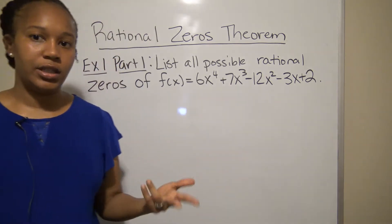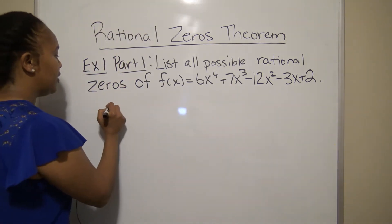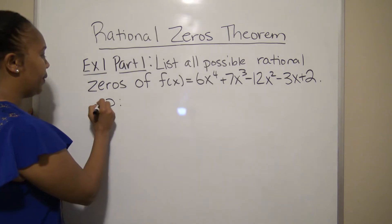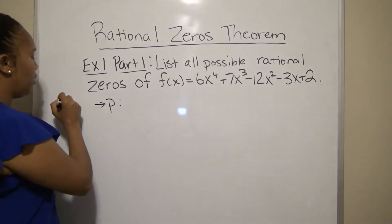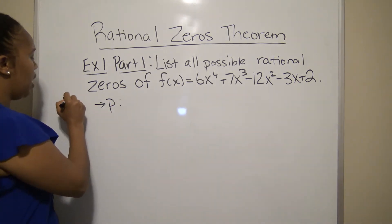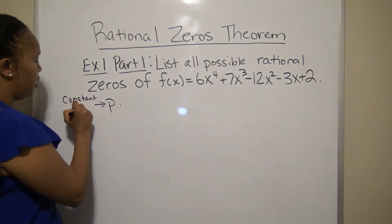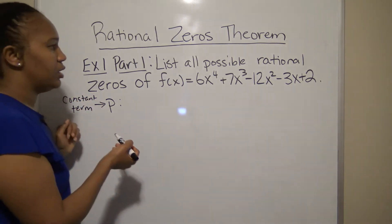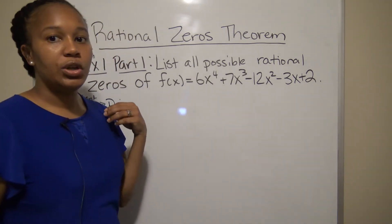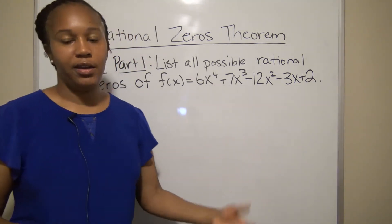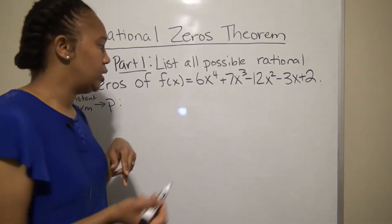To start, find all your p's — the factors of the constant term. The constant term here is 2. The only numbers that multiply to give you 2 are 1 and 2.